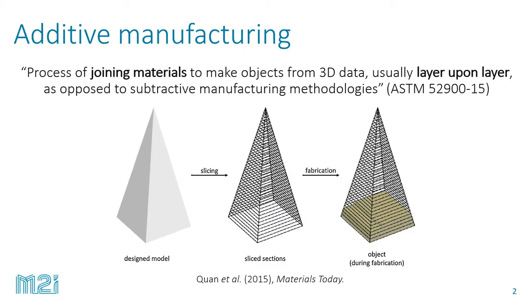First of all, just a reminder of what Additive Manufacturing is. According to standards, it is a general term for the process of joining materials to make objects based on a 3D model by adding material, usually layer upon layer. This is a general description because it refers to every material, technology, and scale.